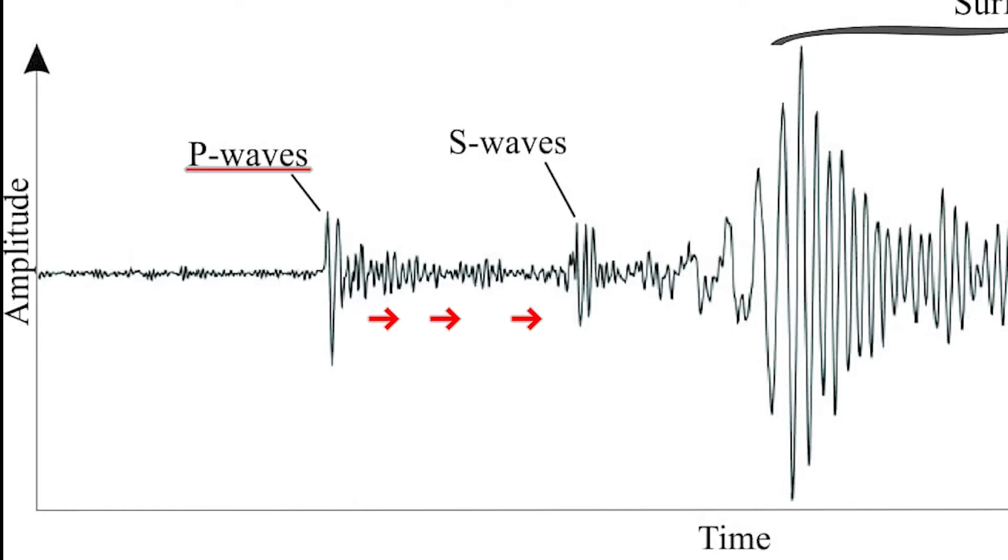S waves, or secondary waves, are transverse waves, moving up and down like ripples of water.